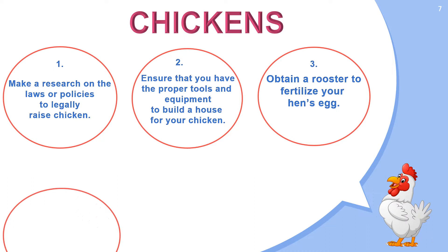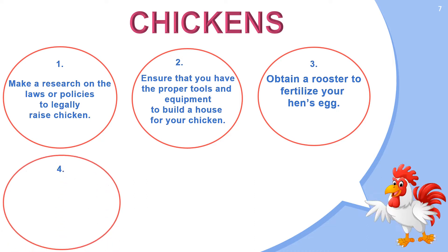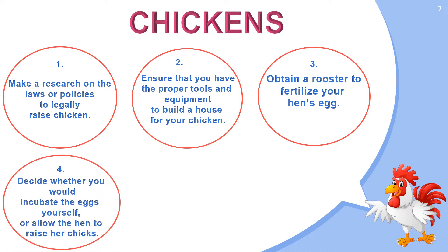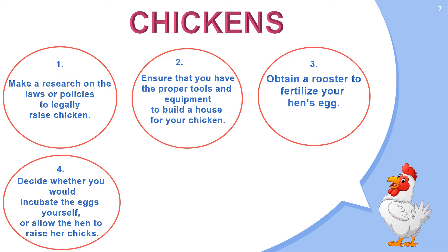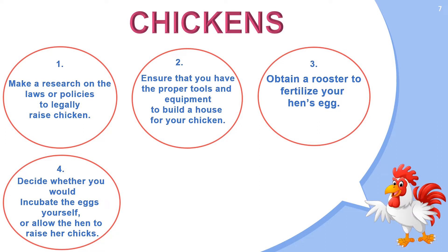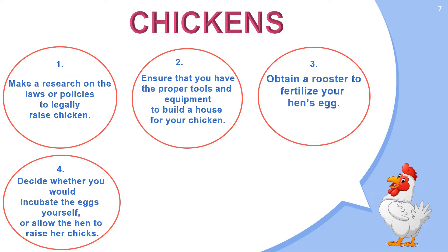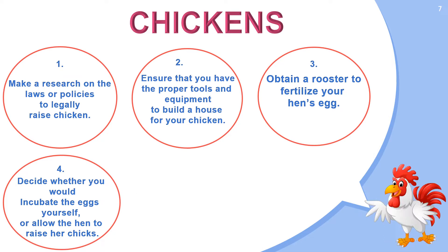For the fourth one, decide whether you would incubate the eggs yourself or allow the hen to raise her chicks. Letting the hen raise the eggs will result in about 3 months of lost egg production — 21 days to set and hatch her clutch and another 2 months to raise her chicks before she starts laying again.